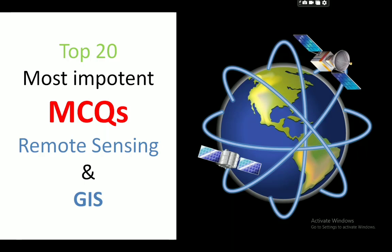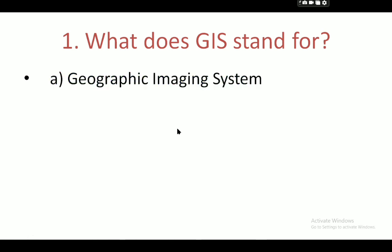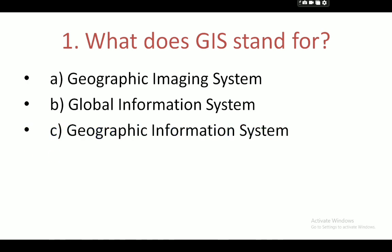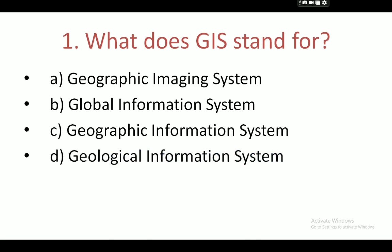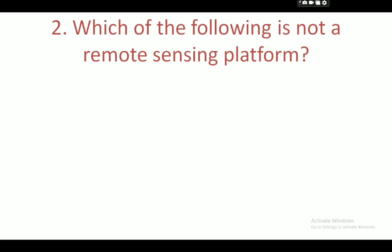Hello everyone, today we are going to learn a top 20 MCQ about remote sensing and GIS. Your first question is: what does GIS stand for? Your options are: geographic imaging system, global information system, geographic information system, and geographical information system. The correct answer is geographic information system.